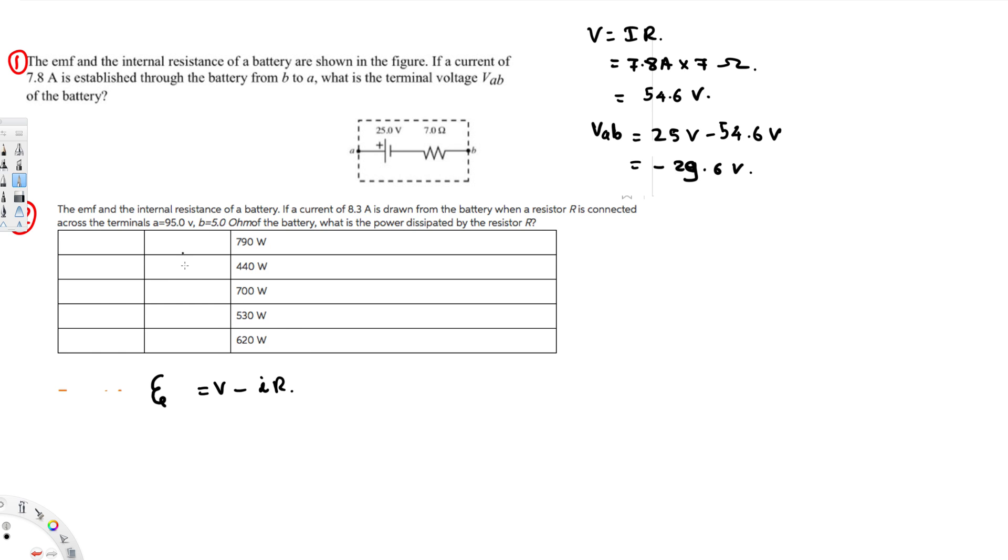V is going to be this terminal voltage ratio, that's 95 minus 5. Minus IR is going to be voltage due to this resistance. That can be calculated by multiplying by this ampere, that's going to be 8.3 times 5. If you calculate this one, that's going to give you 53.5 volt.